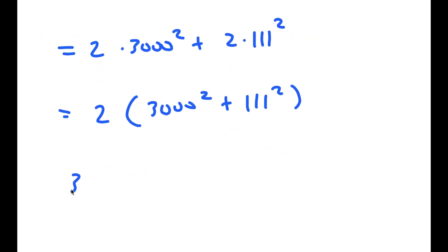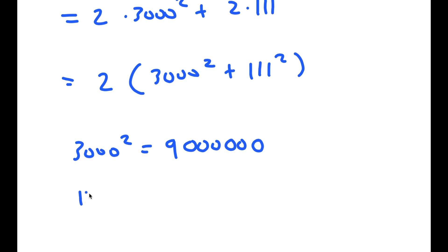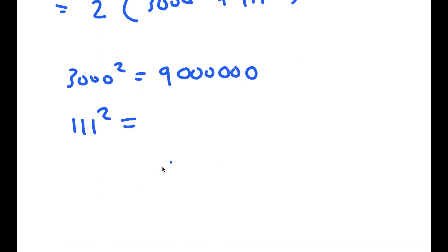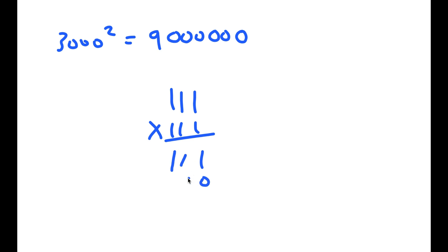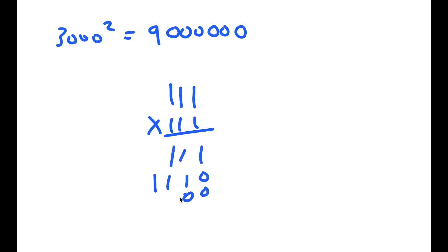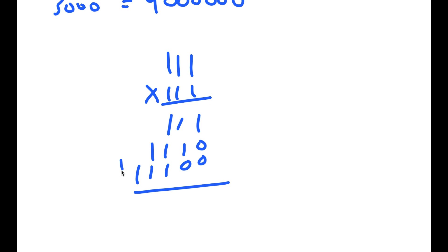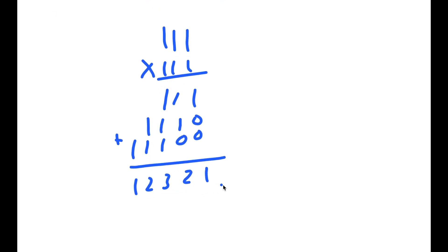Now, 3,000 squared is equal to 9,000,000 and 111 squared, we can actually solve this right here. 111 times 111, it's 12,321.